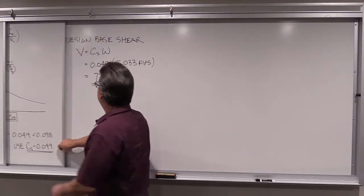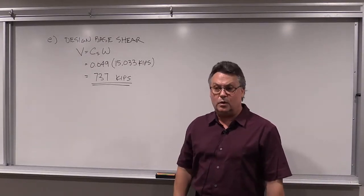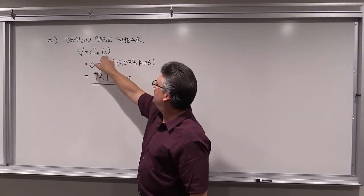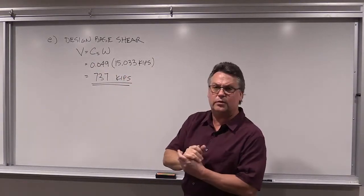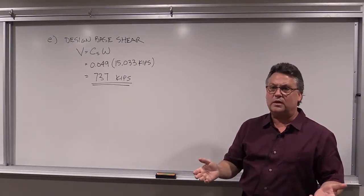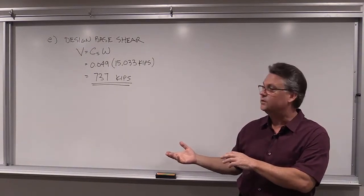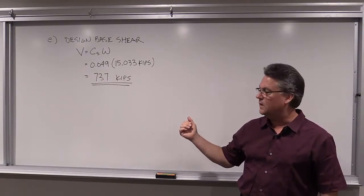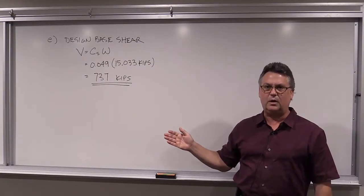For the five-story steel office building in San Luis Obispo with relatively low geotechnical parameters, the design base shear coefficient is 0.049. With one coefficient — that's progress, we used to have so many — 0.049 times the building weight of 15,033 kips gives a design base shear of 737 kips. I'm going to do one more example: a five-story, much heavier concrete building using shear walls with much higher geotechnical parameters, and we'll run through the same calculations for that concrete building.